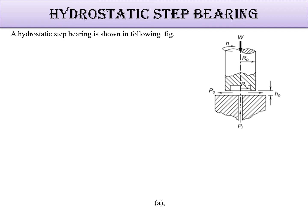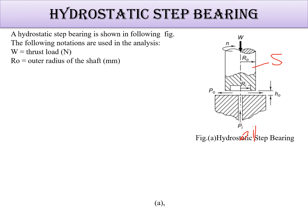This is the shaft, and here the pressure is coming out. Oil is coming out from here. This is the Pi initial pressure and Po is the outer pressure. You can see the nomenclature also. W is the thrust load, Ro is the outer radius of the shaft, Ri is this radius, this much radius, and Pi is the supply of inlet pressure.